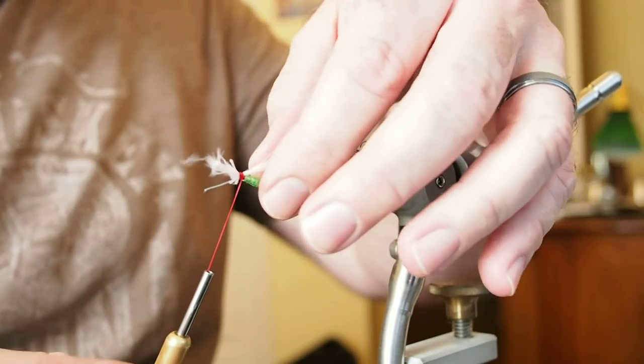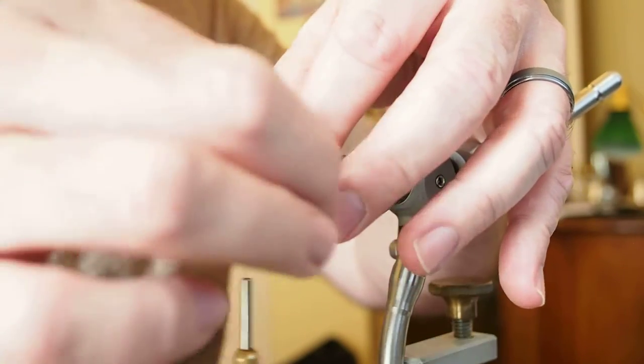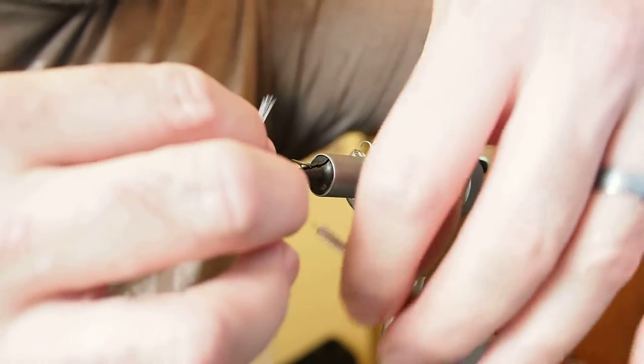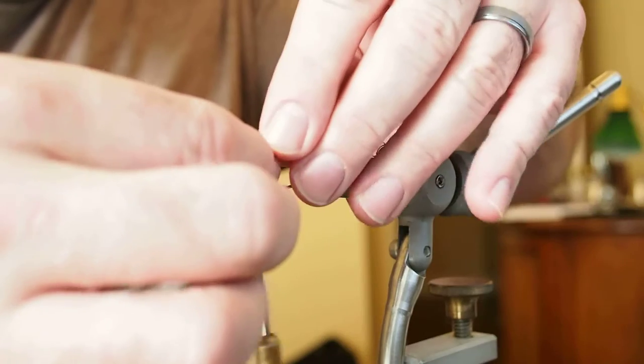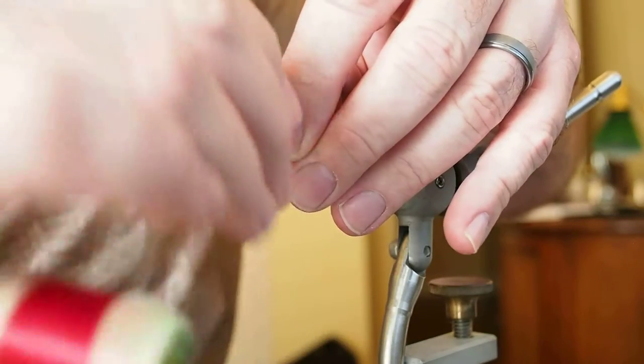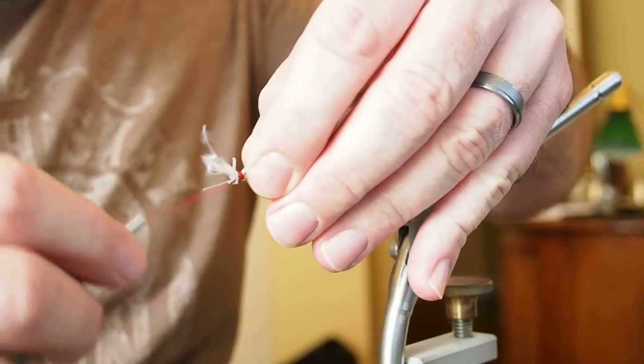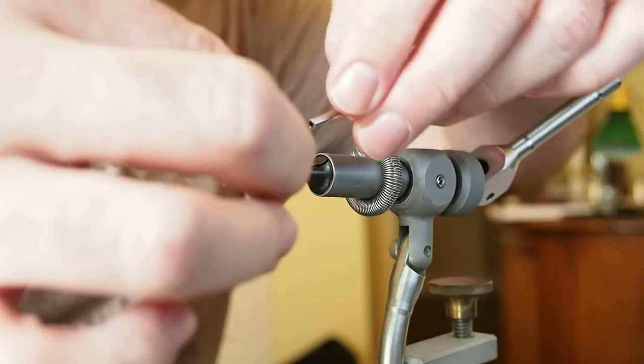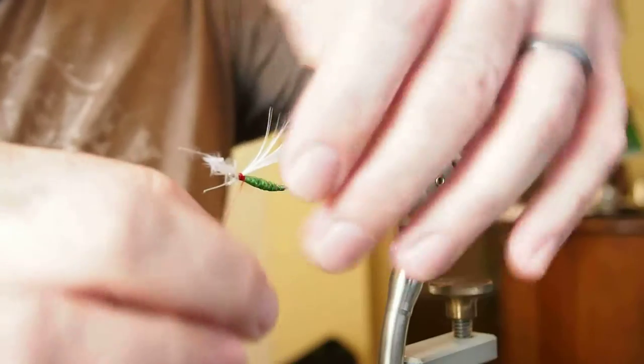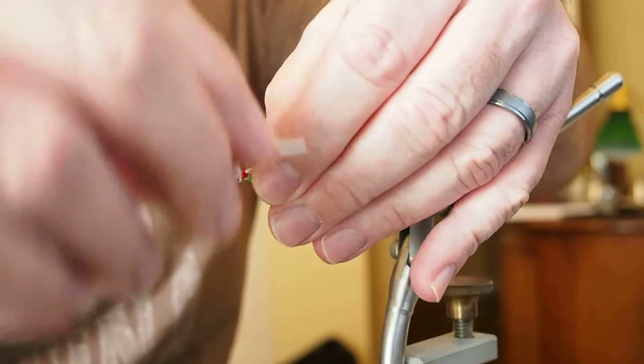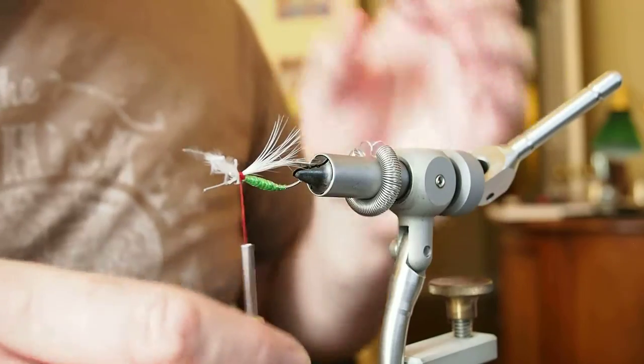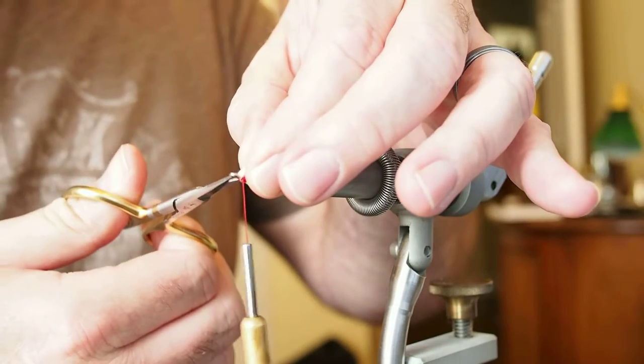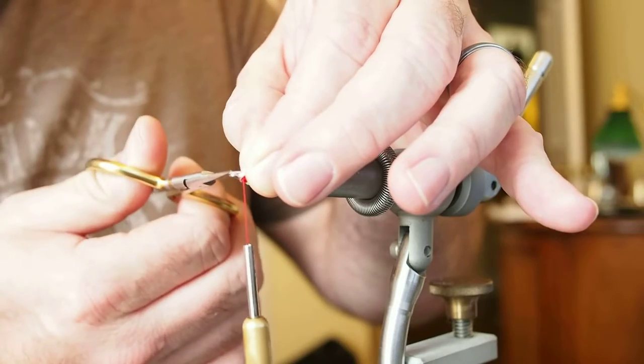Now, I like my throats to kind of stick up slightly, so I'm going to lift that throat or hackle up and just do one wrap underneath. And kind of pull that straight under. Give it one wrap on top and then do that again. And that's just going to get that throat to kind of stand up a bit. Go ahead and trim off your tag end there of the hackle.